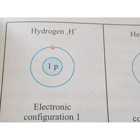In the K orbital, the maximum number of electrons possible is two. The hydrogen atom is number one, so in the K shell there is only one electron. To repeat: the hydrogen atom is a unique atom which has only one proton and one electron and does not possess a neutron. This is called the electronic configuration of the hydrogen atom.